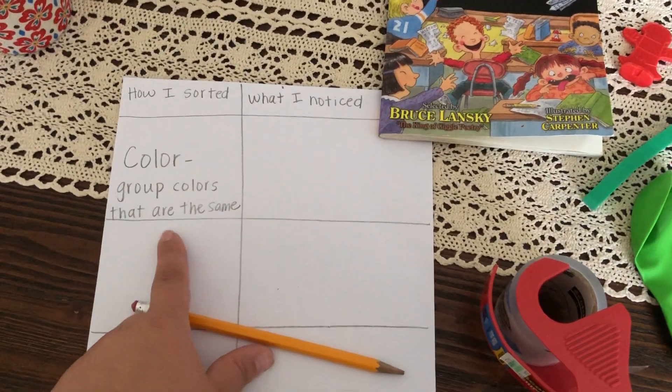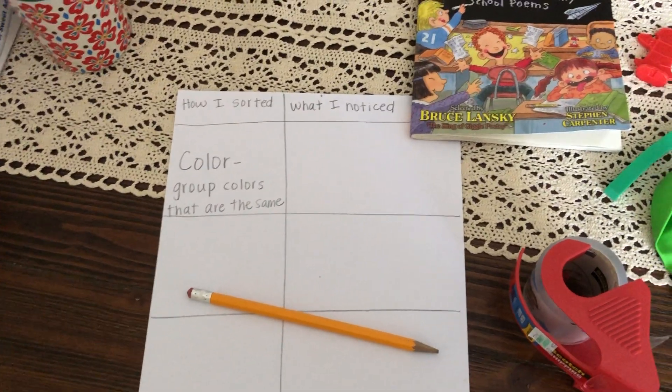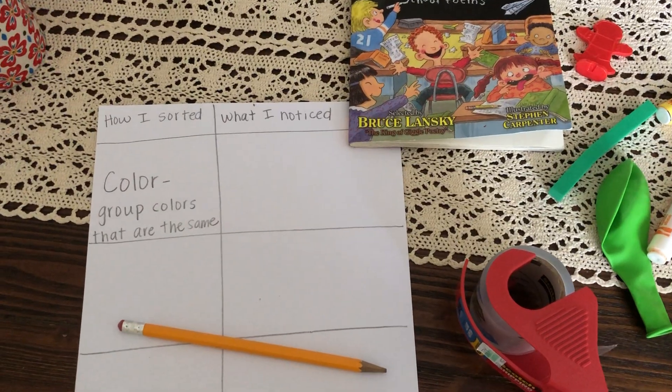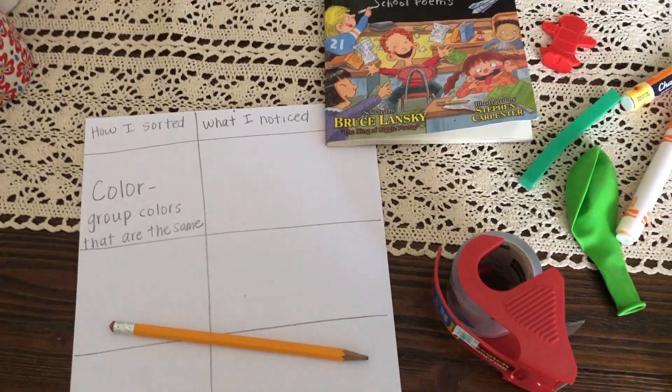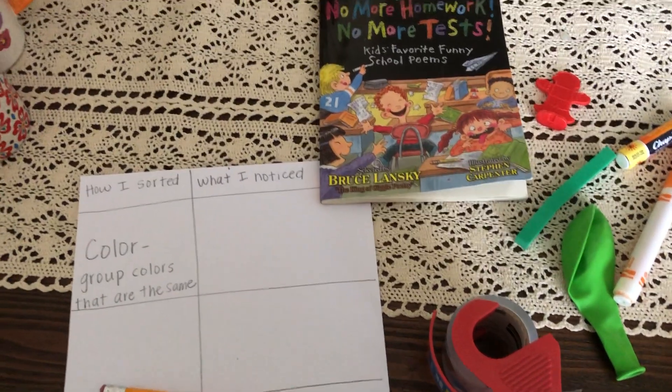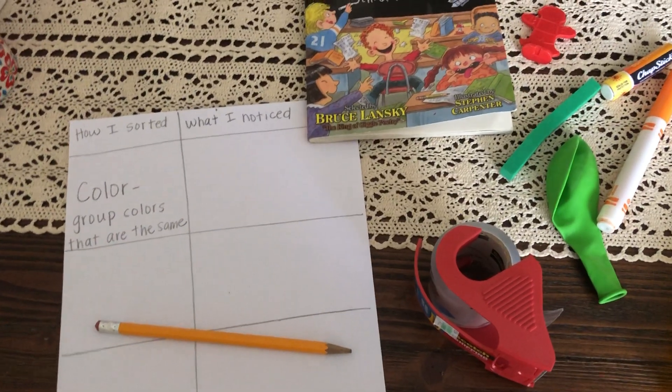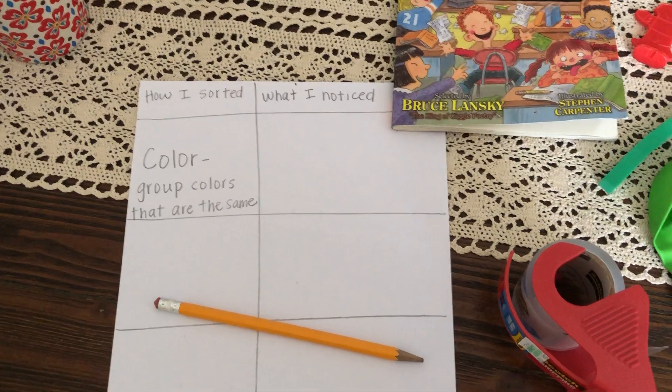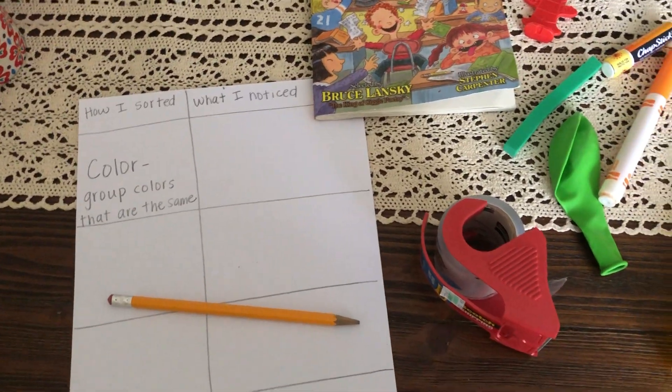I've already decided the first way I want to sort my objects is by color. I want to group colors that are the same. You can decide how you want to sort your objects first. It could be by color, by size, by weight, or by how it feels - the texture. I think I'm going to sort mine by color. You can follow along with me and sort yours by color too.